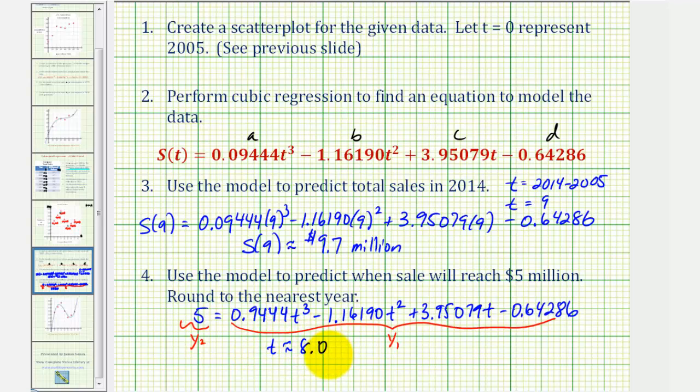But remember, this represents a number of years after 2005. So to find the actual year, we take the base year of 2005 and add eight. According to our model, the sales would reach five million dollars in 2013. It may or may not actually do this in 2013, but based upon this model, this is when it would occur.